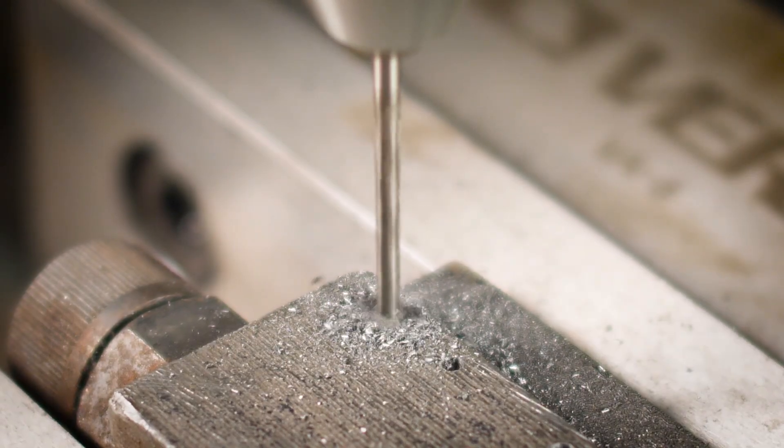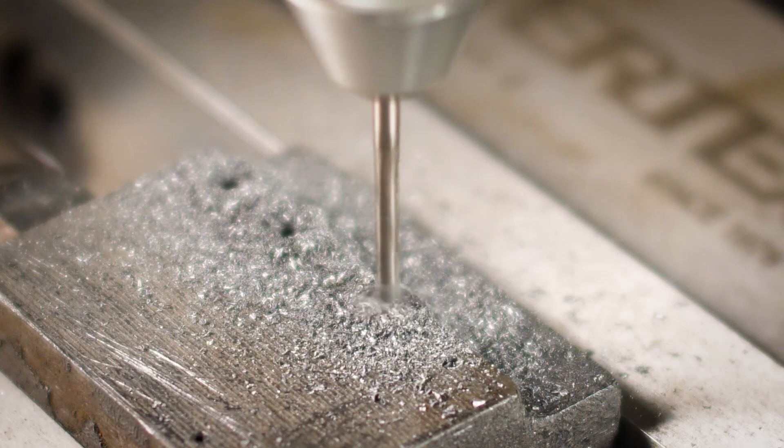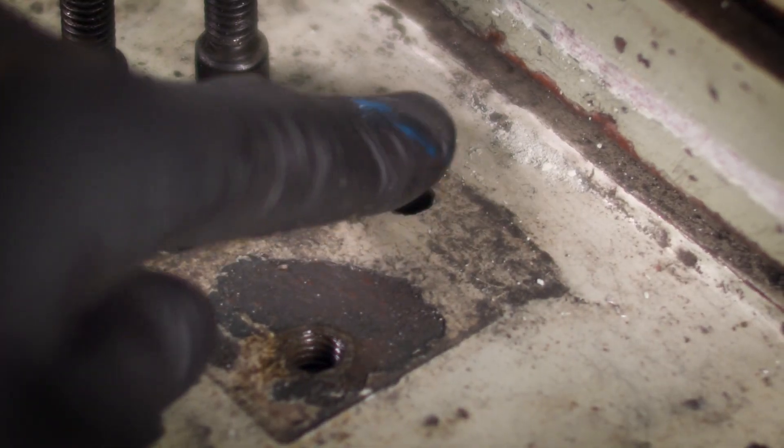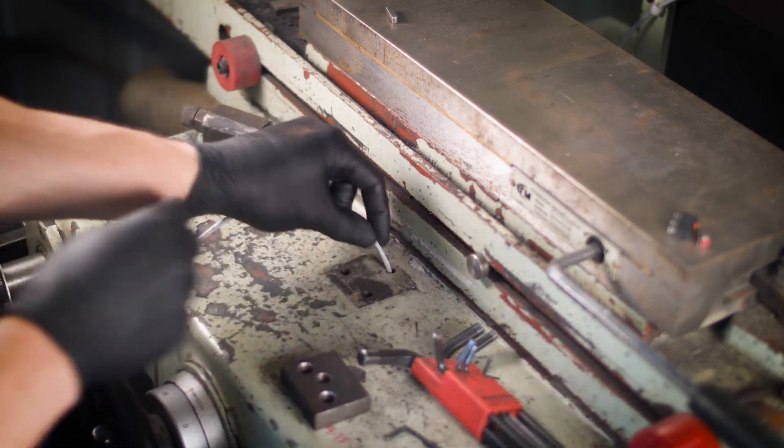I modified the existing stop block with an adapter plate. This will mount the limit switch. I drilled a hole through my grinder table, and this is for the limit switch signal wiring.